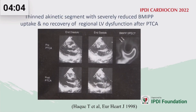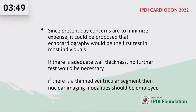A contrasting example shows a thin dyskinetic anteroseptum with almost no fatty acid uptake, and this segment failed to recover after revascularization. Based on these findings, the suggestion is that echocardiography should be the first test in most individuals. If wall thickness is adequate, no further testing is necessary. If a thin ventricular segment is found, nuclear imaging modalities should be employed.